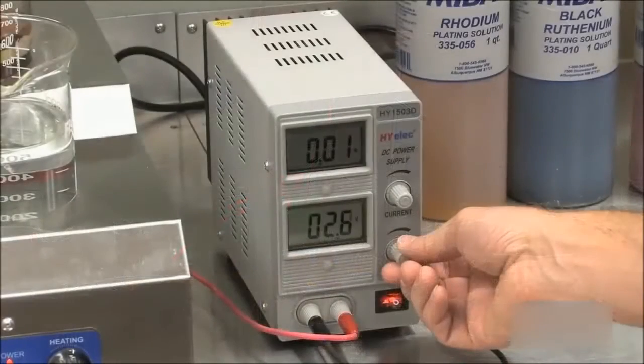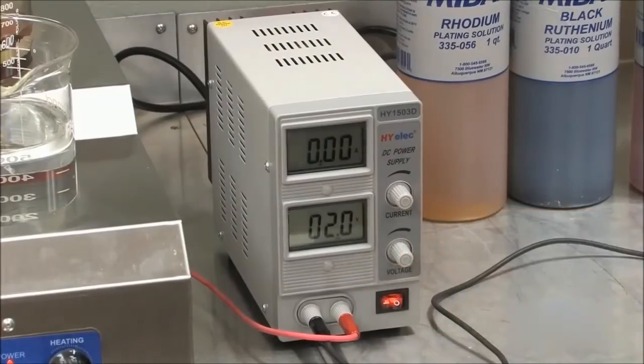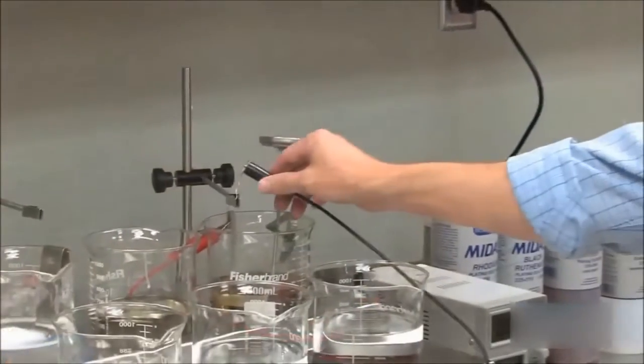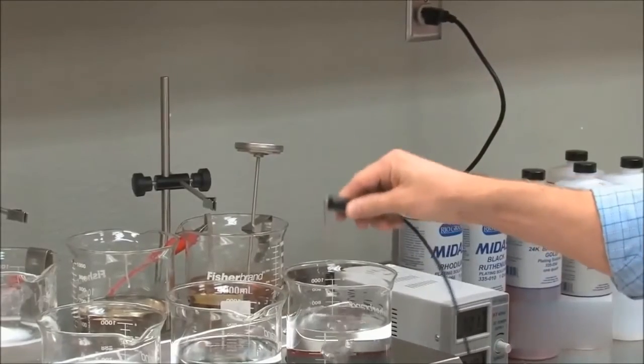Set the voltage between 1 and 3 volts and attach the handling wire to the negative cathode. Immerse the piece in the solution for 30 seconds to 3 minutes. Plate the piece right after rinsing from the acid bath.